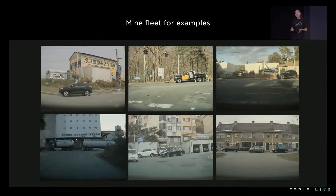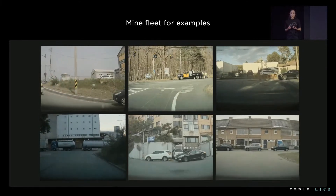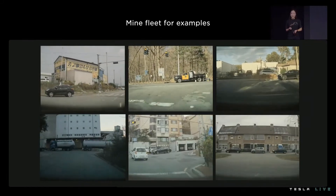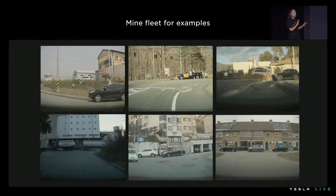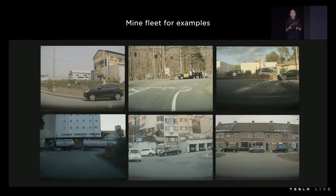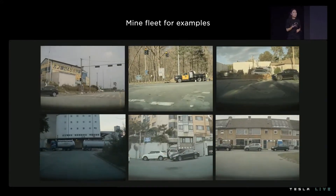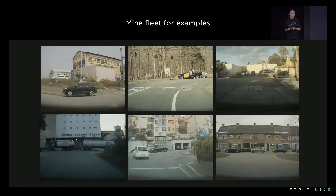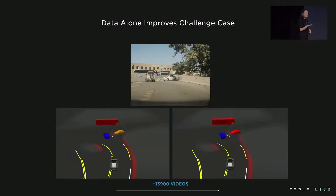To actually solve that challenge case requires mining thousands of examples like it, and it's something Tesla can trivially do. We simply use our data sourcing infrastructure, request data, and use the tooling shown previously to correct the labels. By surgically targeting the mispredictions of the current model, we're only adding the most valuable examples to our training set. We surgically fix 13,900 clips, and because those were examples where the current model struggles, we don't even need to change the model architecture. A simple weight update with this new valuable data is enough to solve the challenge case.